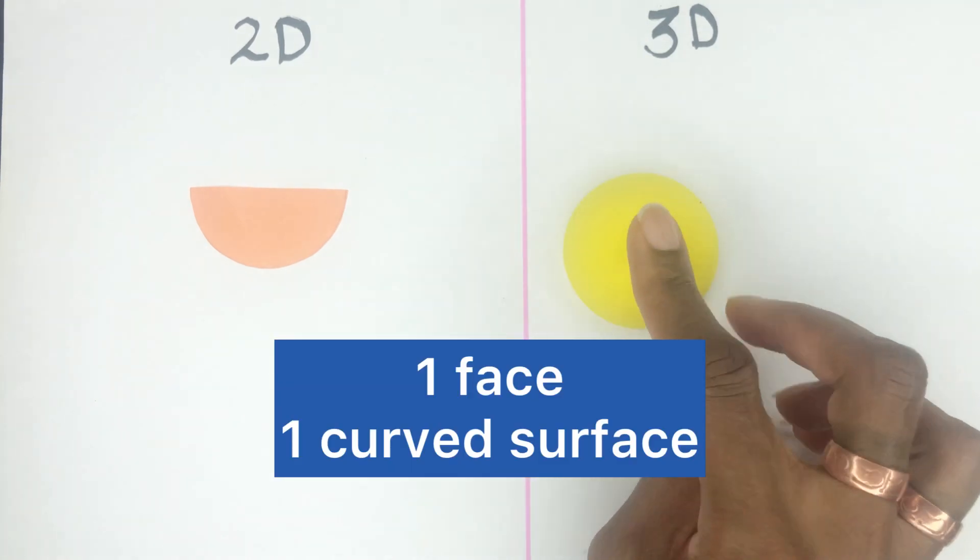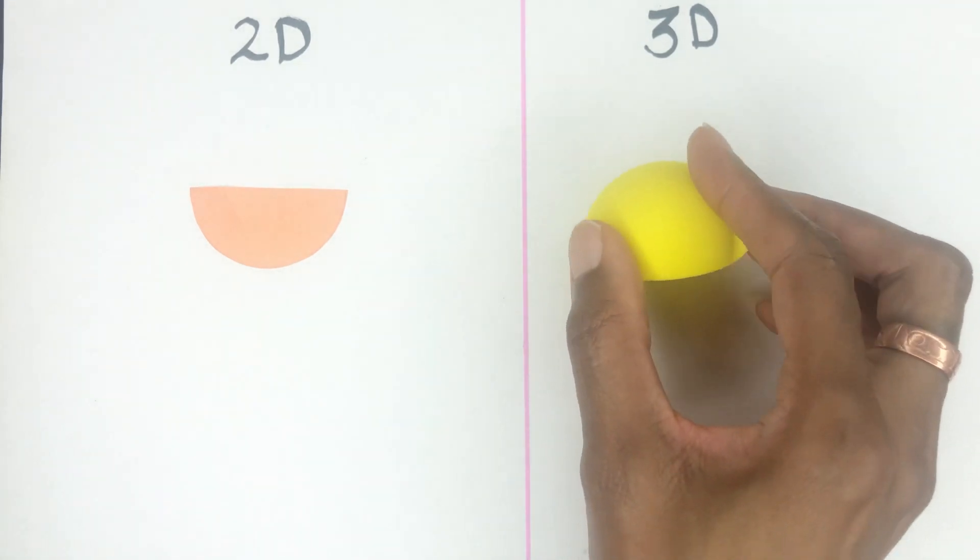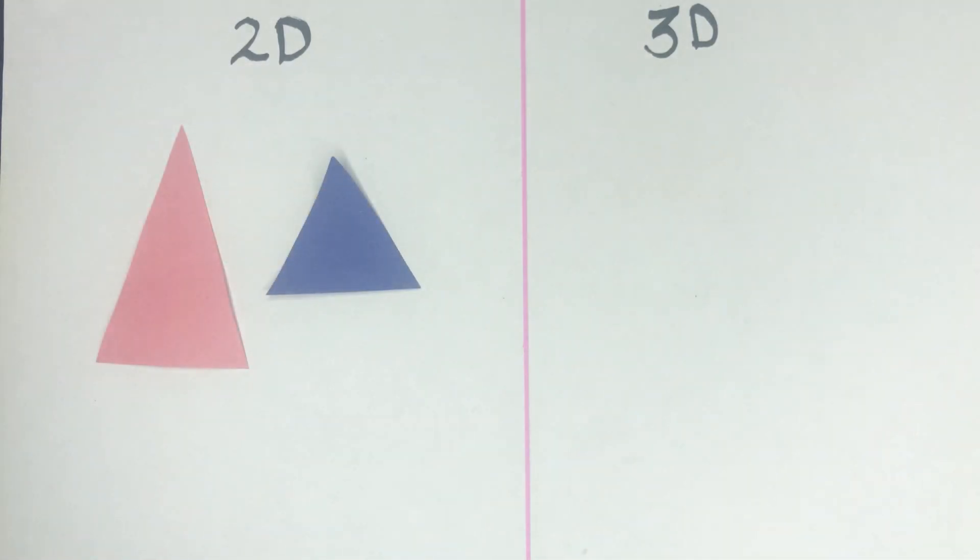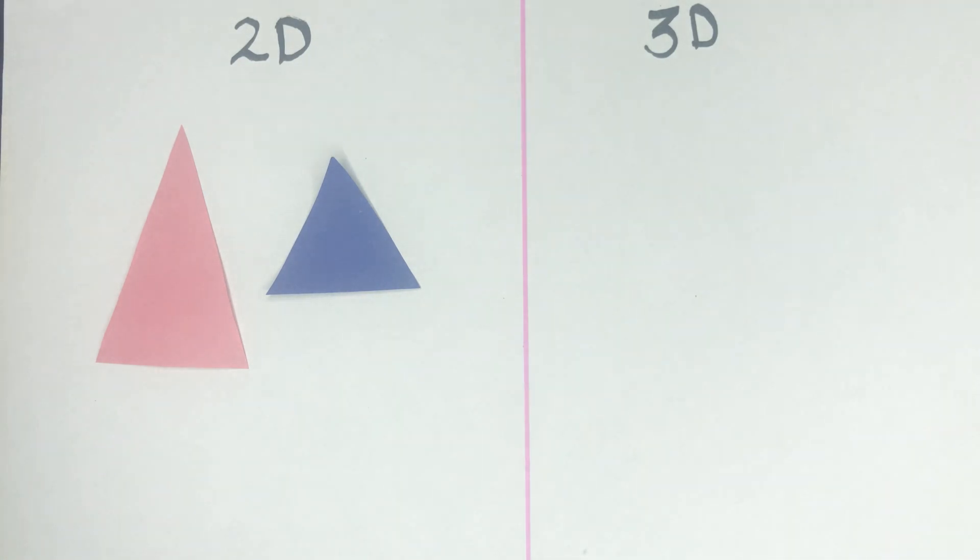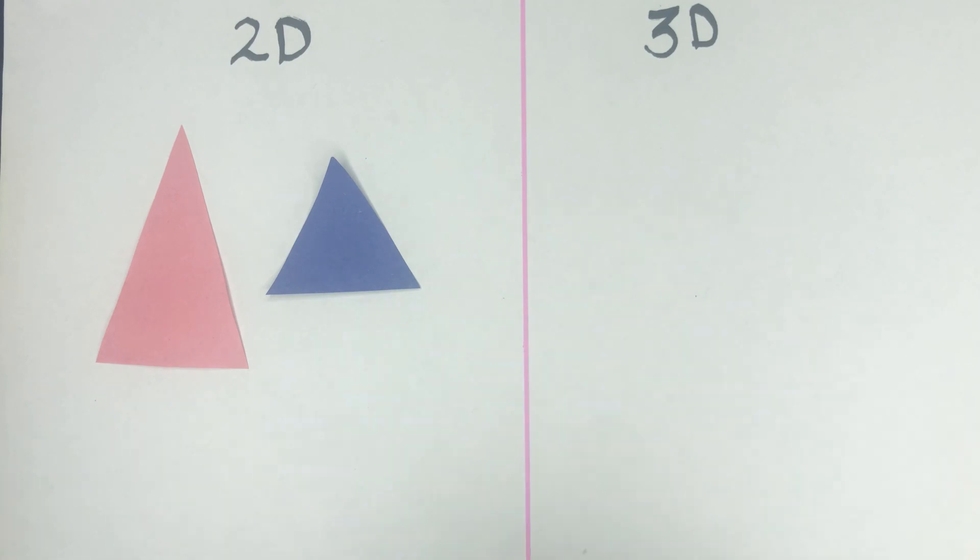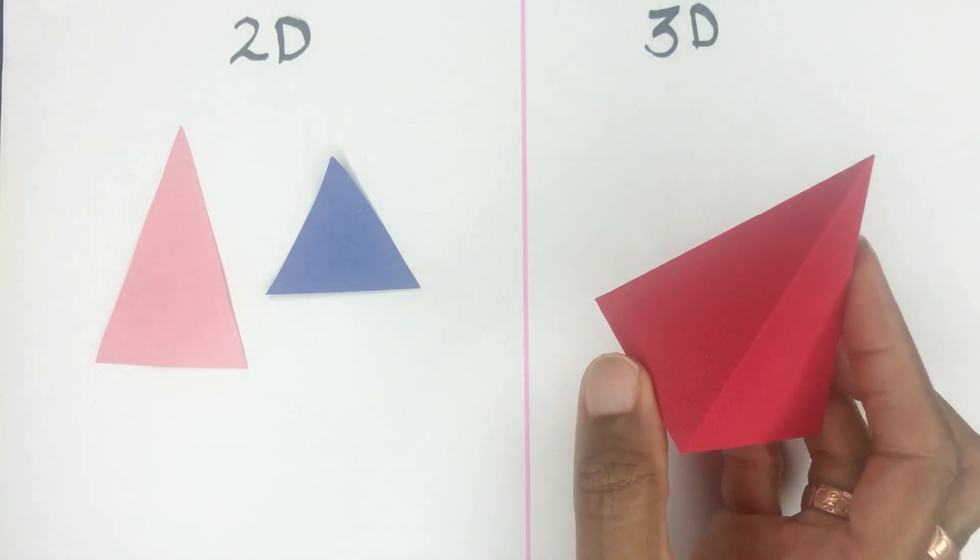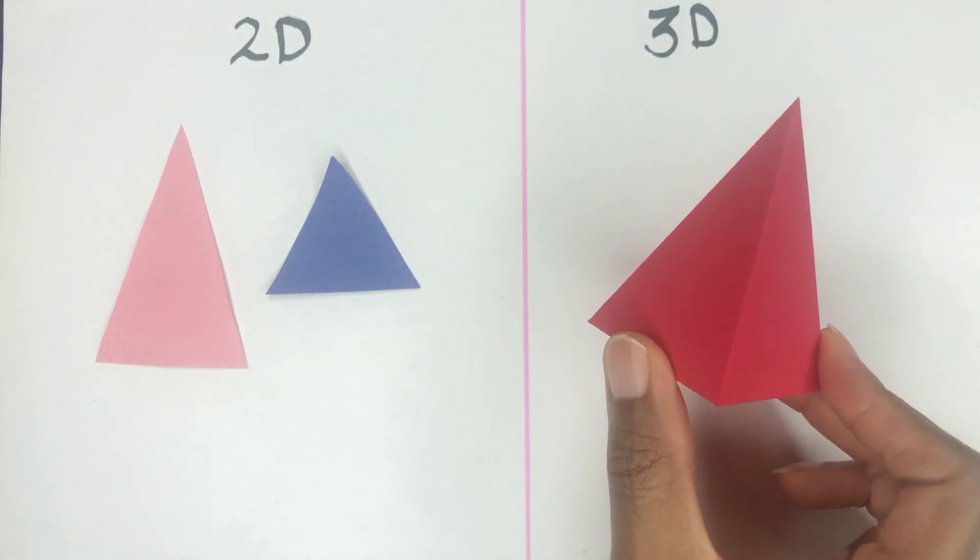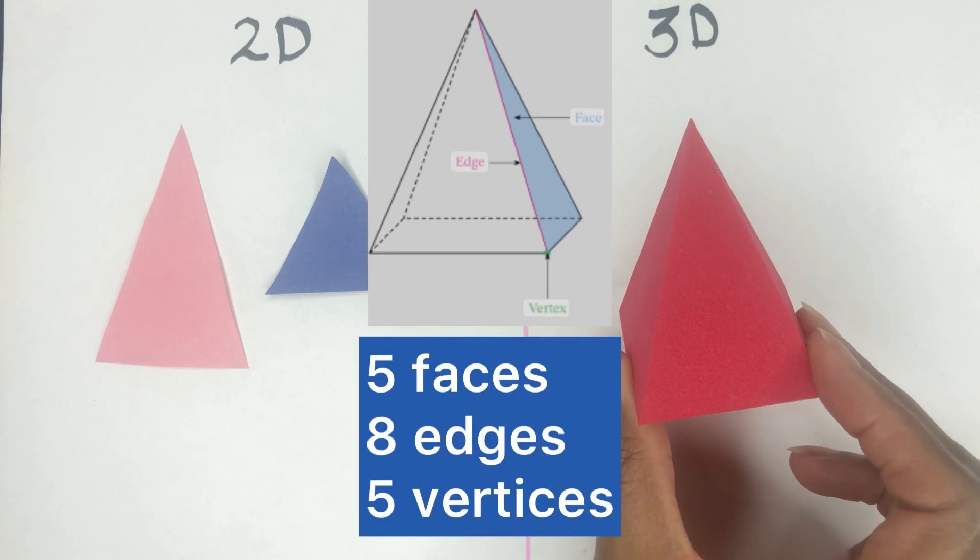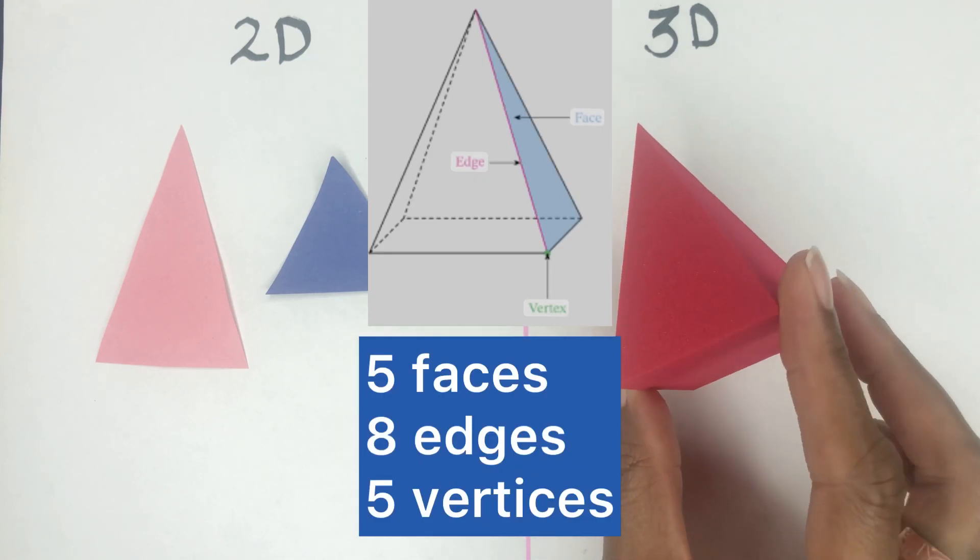Two-dimensional, we have triangles. This is an isosceles triangle, this is an equilateral triangle. I'll probably do a video later on with different types of triangles. There's more than these two here. This is a pyramid, a square-based pyramid, and it has five faces, eight edges, and five vertices.